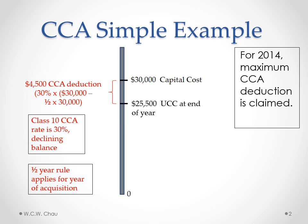So we claim that $4,500 deduction for 2014, and that brings our Class 10 balance down to $25,500. That remaining balance is called the UCC, which stands for Undepreciated Capital Cost.